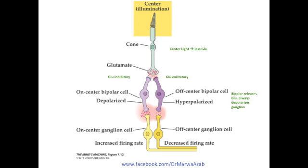Let's go back to our example. When the center illuminates the photoreceptor, as a result of this illumination of the receptive field, it releases less glutamate. Because this glutamate typically has an inhibitory effect on the on-center bipolar cell, the decrease in its release results in an increase in depolarization for the on-center bipolar cell. This depolarization will result in an increase in glutamate release onto the ganglion cell, which is always excitatory, always leading to depolarization of the ganglion cell. This increase in depolarization of the on-center ganglion cell leads to an increased firing rate and action potentials.